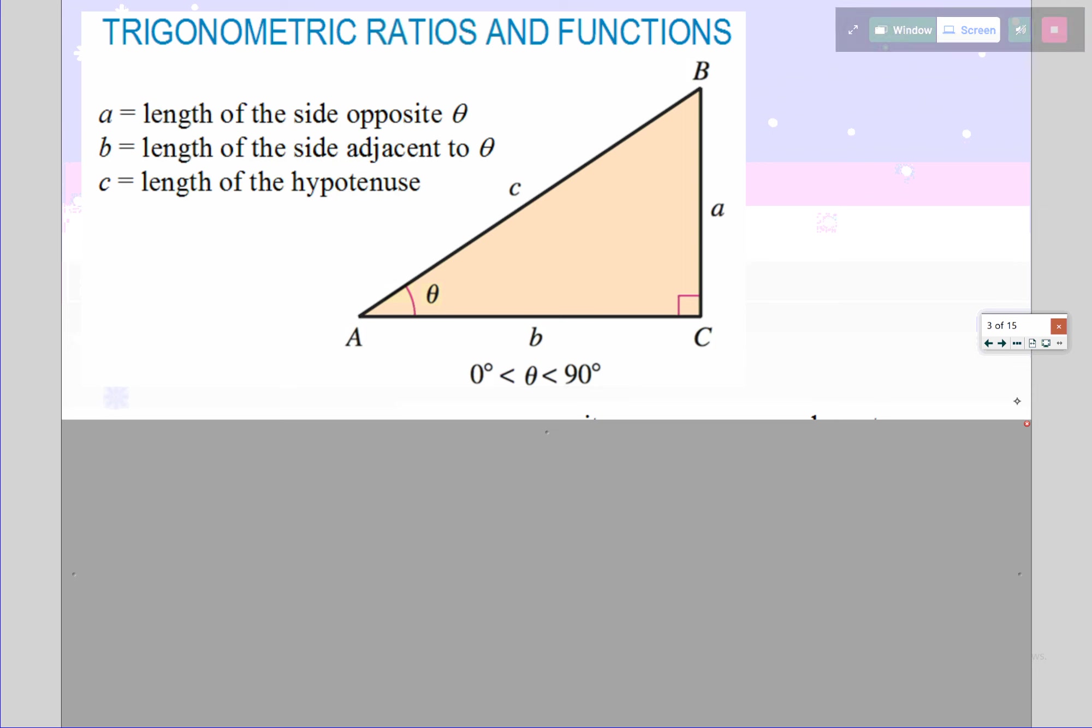Draw this right triangle in your notes and label all the sides and angles here. A couple of things to notice: capital letters are angles, lowercase letters are sides. Also, if it's the same letter, they are opposite one another in the triangle. When we say opposite, we mean not touching. Angle A is not touching side A, or angle B is not touching side B.